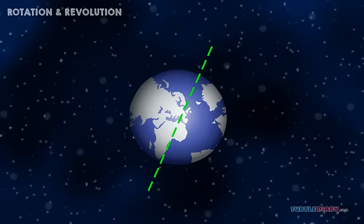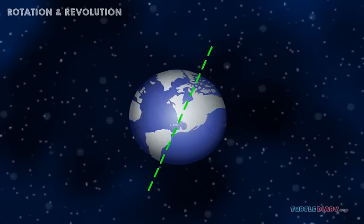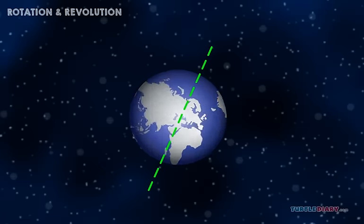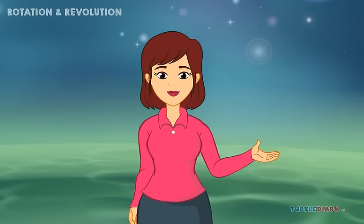The axis is not straight up and down. The Earth tilts a little as it spins. This tilting is very important. It's the reason we have seasons.